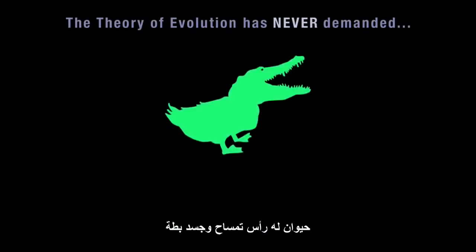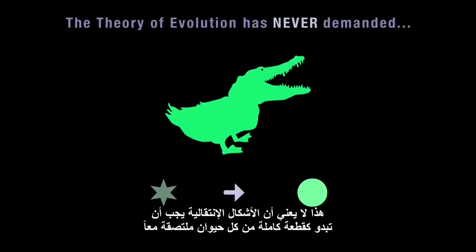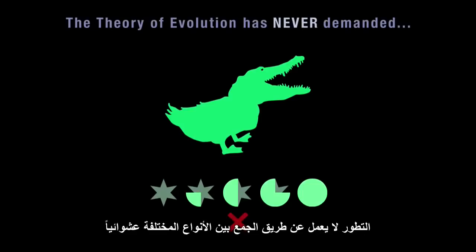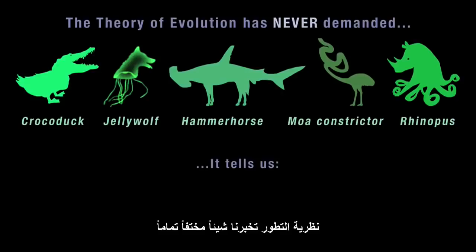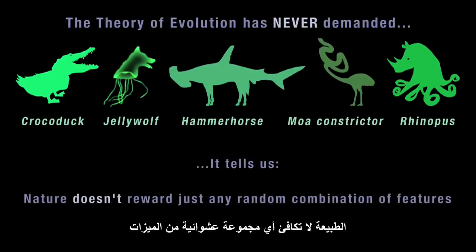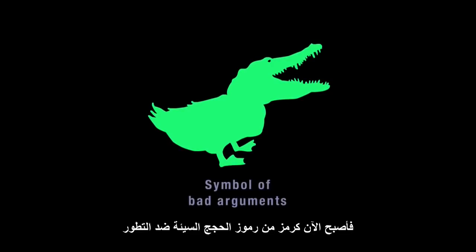The theory of evolution has never demanded the existence of animals with a crocodile's head and a duck's body. Even when there's evidence that one animal evolved directly from another, that doesn't mean the transitional forms must look like whole chunks of each animal stuck together. Evolution doesn't work by combining different species at random, and evolutionary scientists have never hunted for the crocoduck, the jelly wolf, or the rhinopus. Nature doesn't reward just any random combination of features — it rewards only whatever is efficient at reproducing itself. The crocoduck, invented to ridicule evolution, has instead become the symbol of bad arguments against evolution.